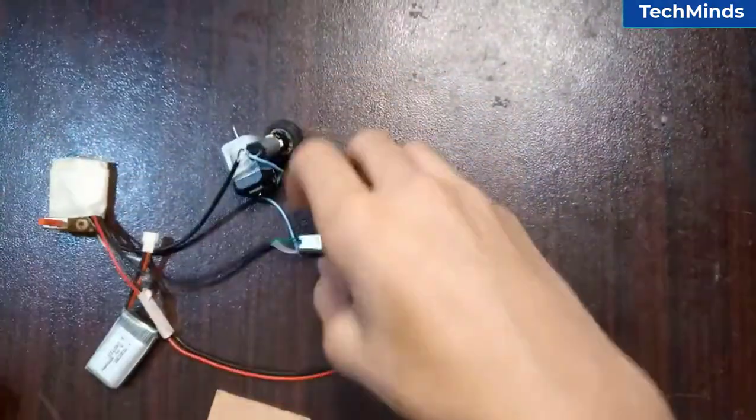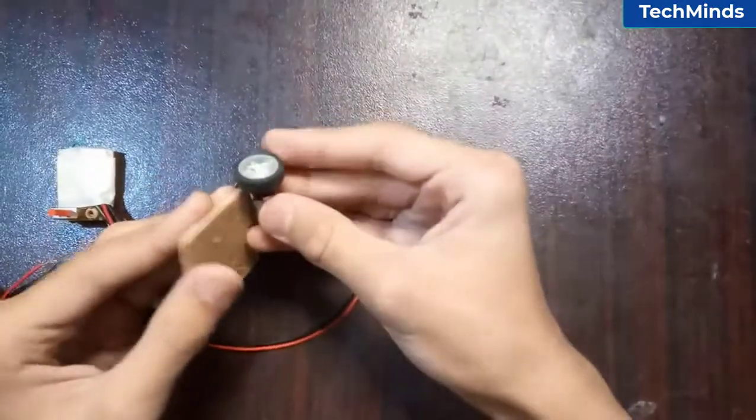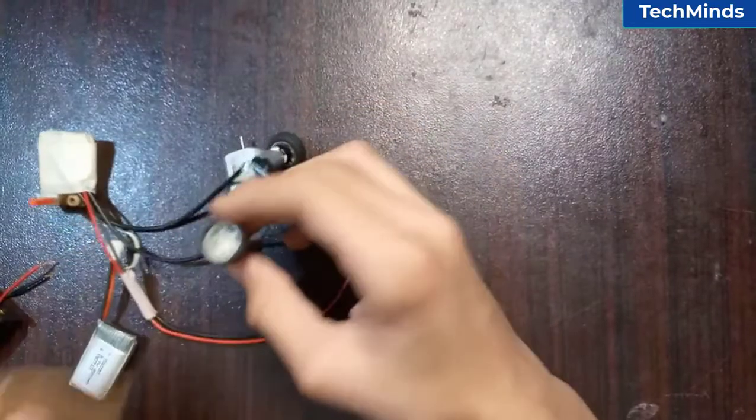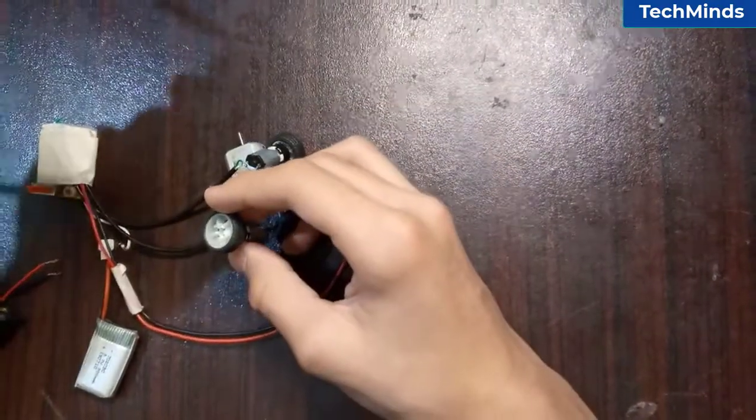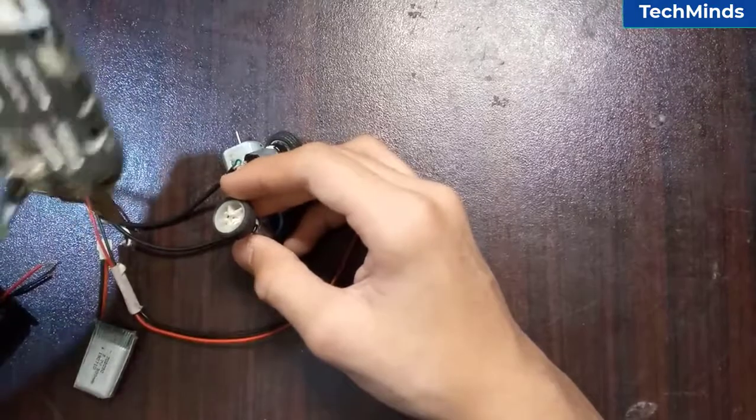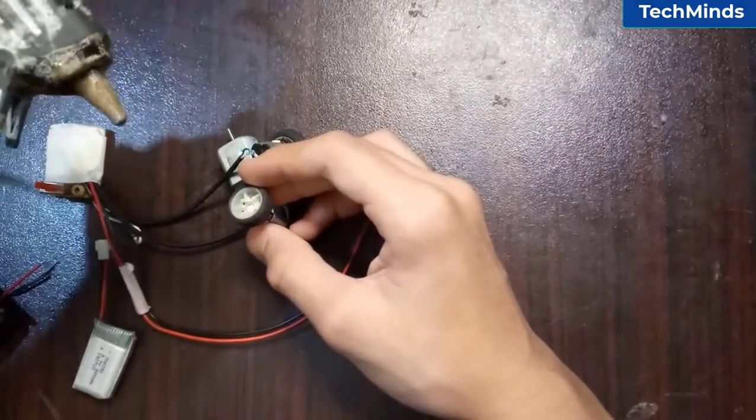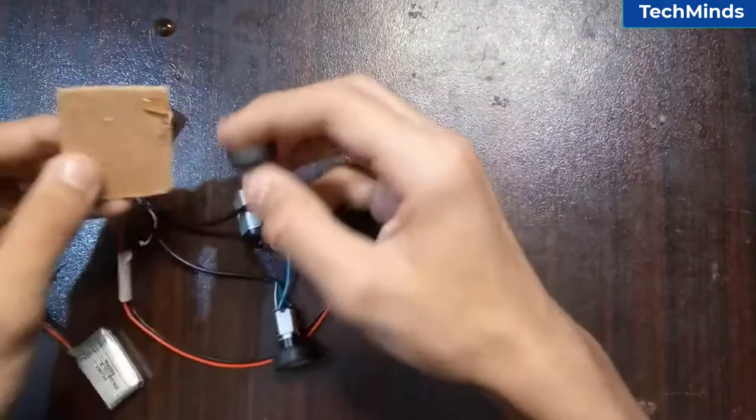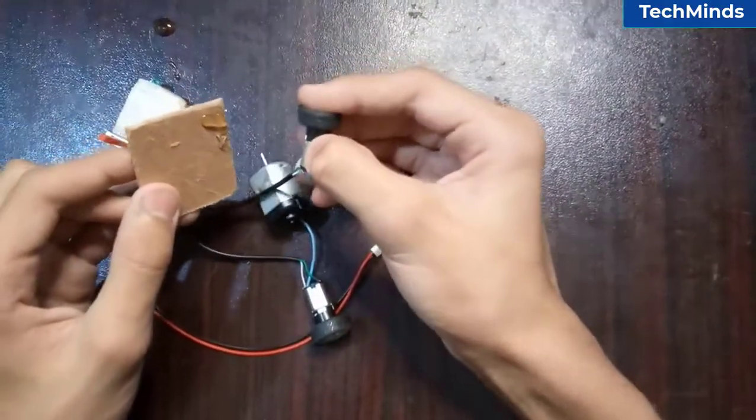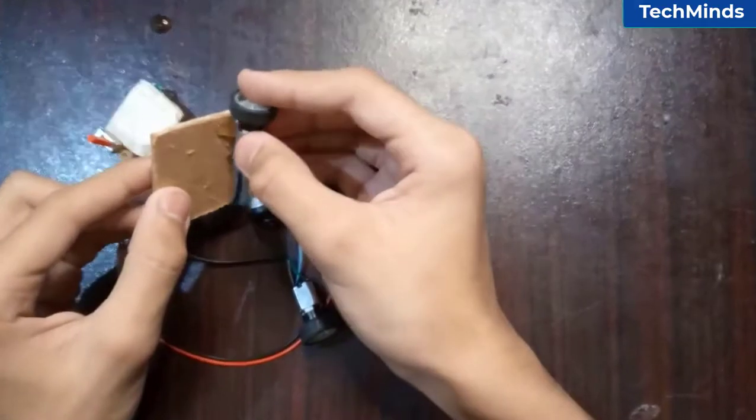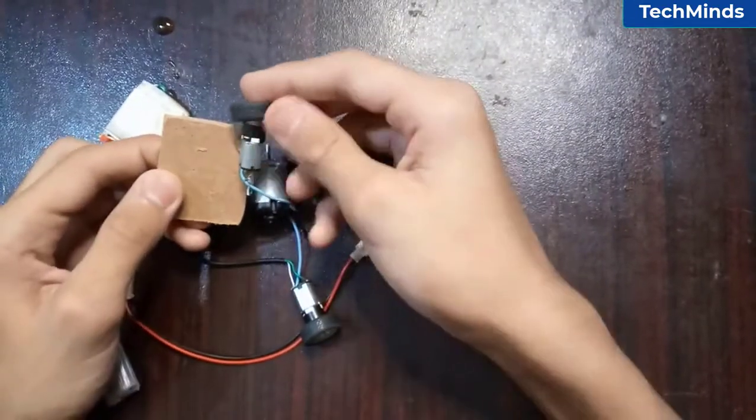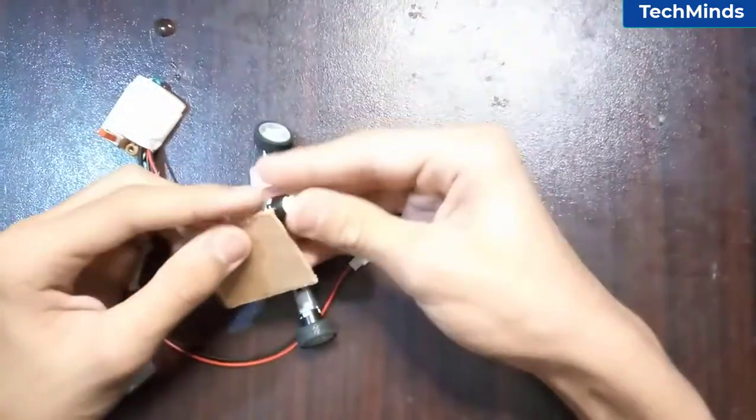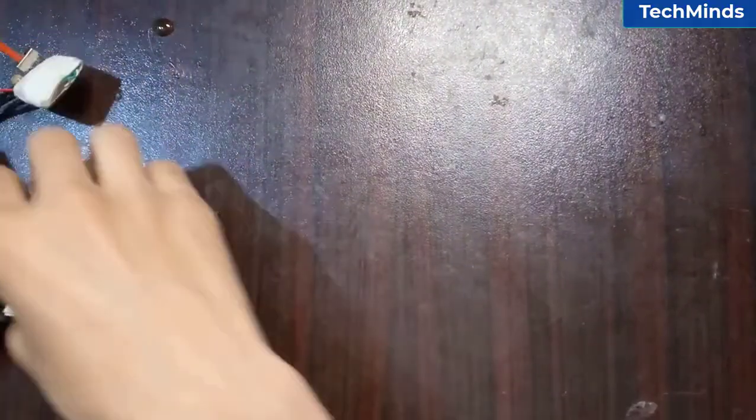Now we'll connect these motors to this hardboard. We're going to be gluing them onto the board, which in this case is the base. Just glue the motors onto the board. Now do the same with the other motor.